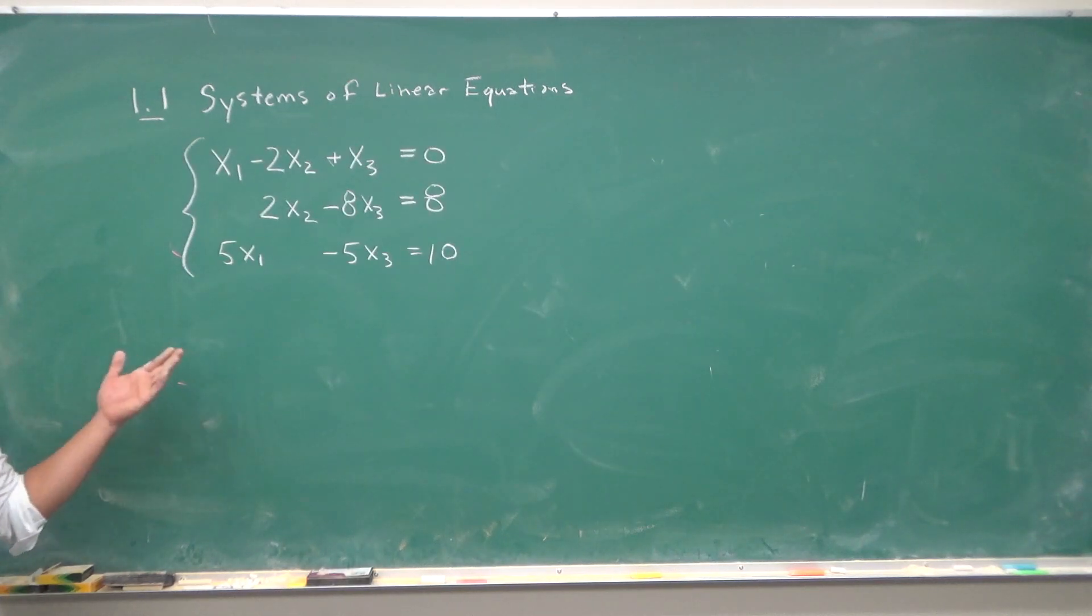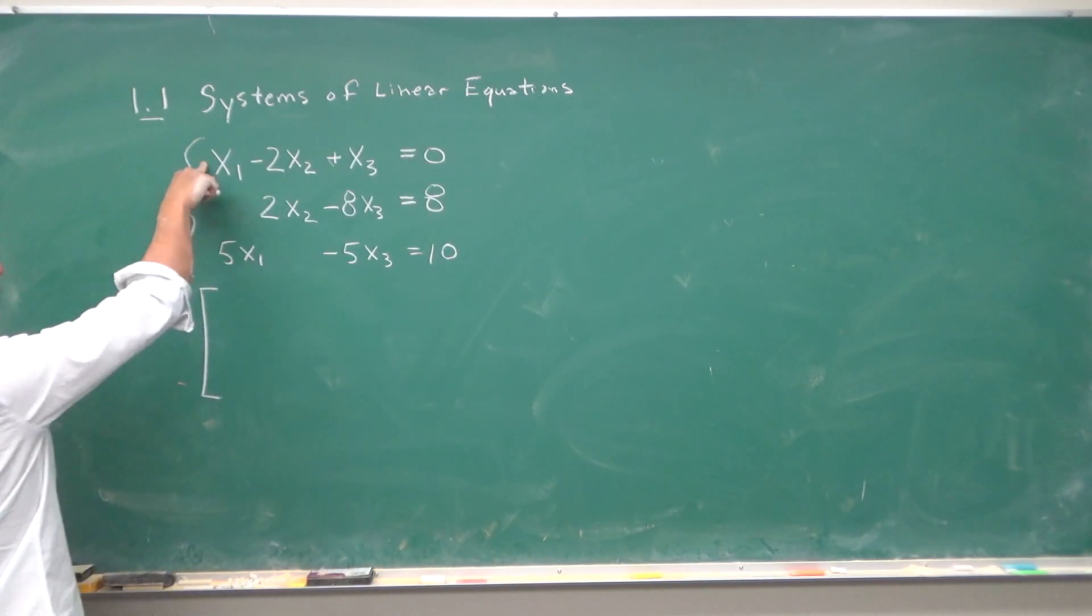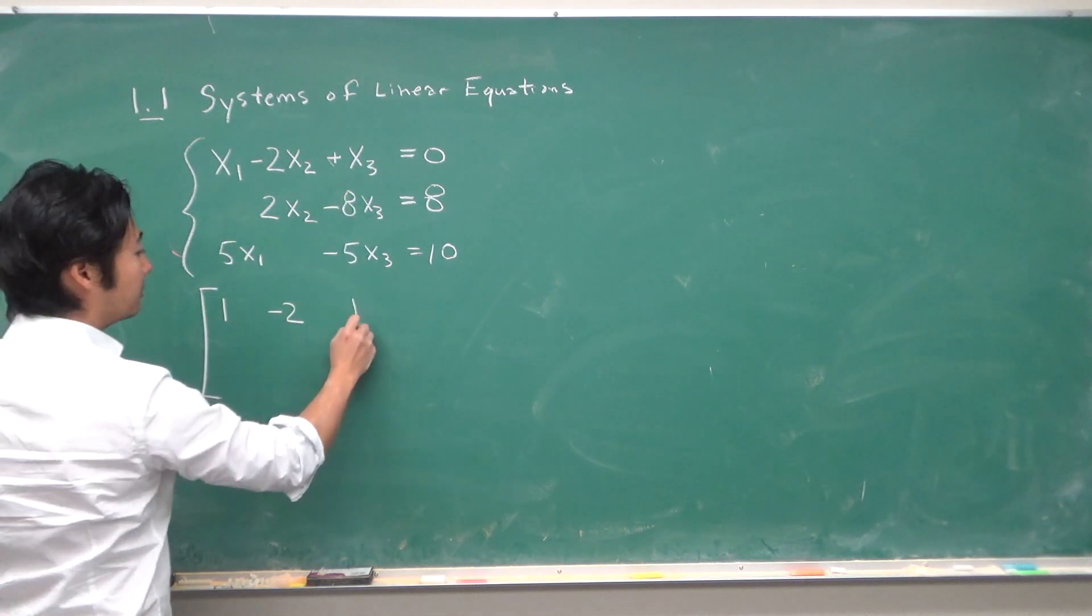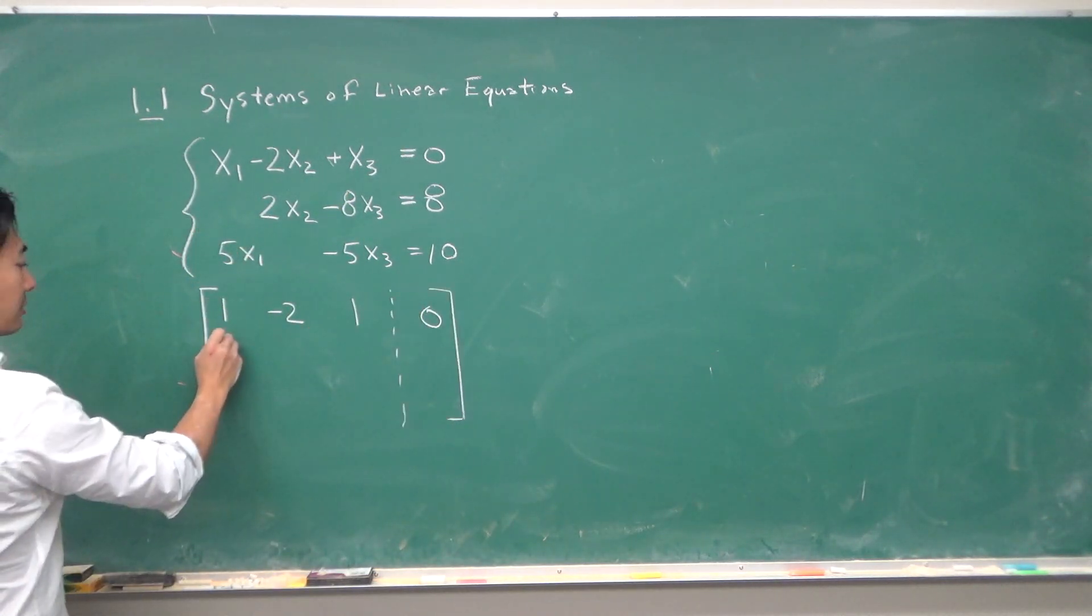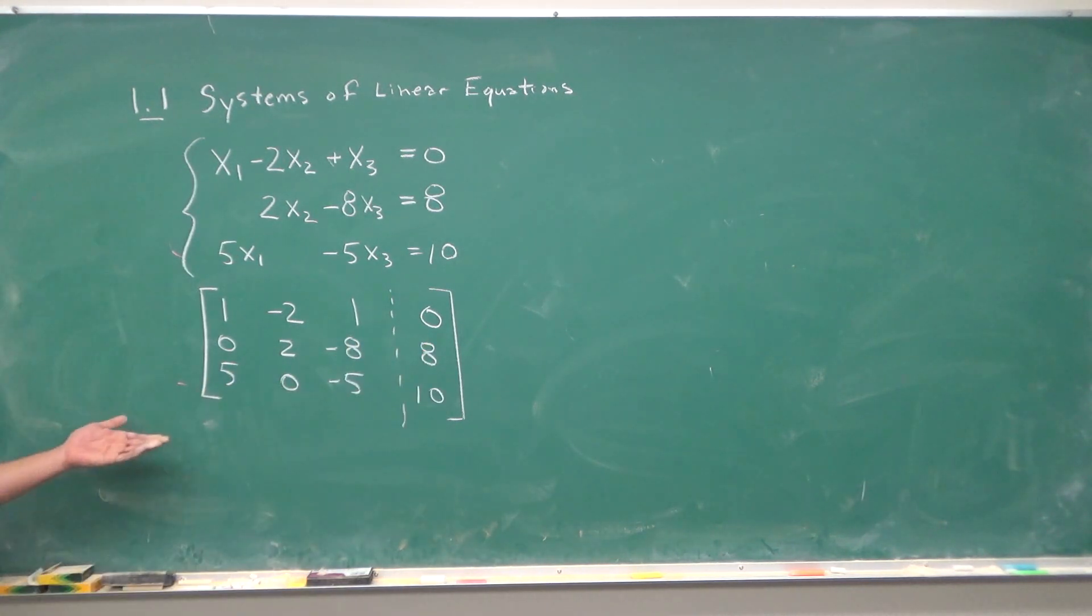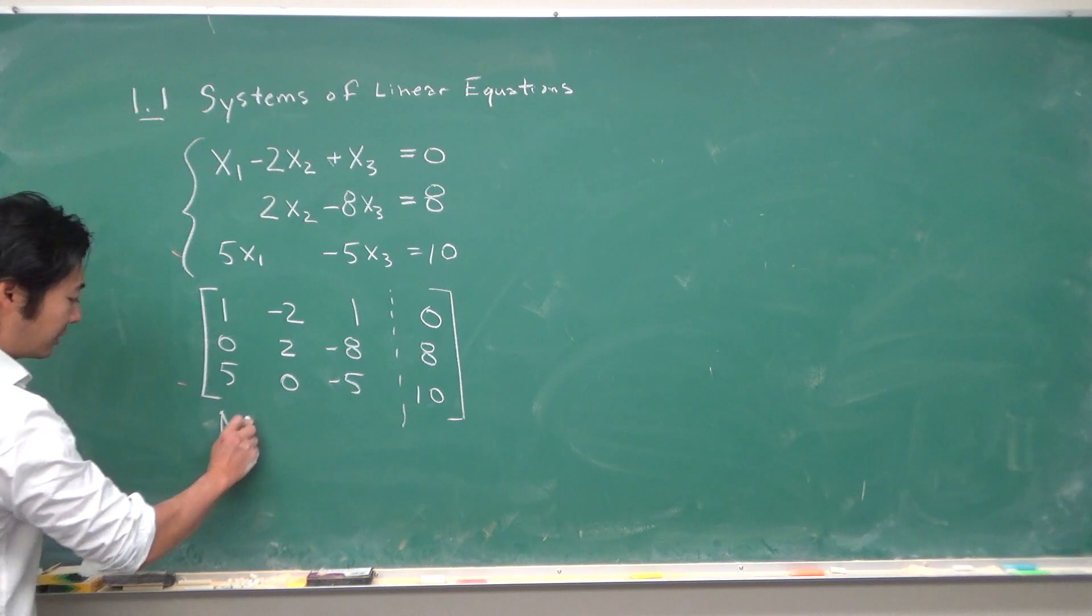From our original equation we just write down the coefficients. So the coefficient in front of x1 is 1. And then minus 2 and 1 and 0. And then there will be 0 and 2 and negative 8 and 8 and 5 and 0. So I wrote down the coefficients in front of each variable in this order. The order is very important. So this is called matrix form.